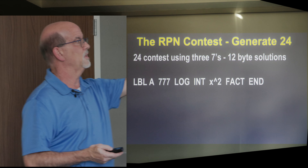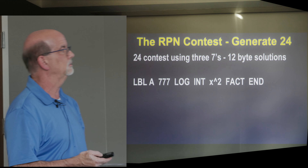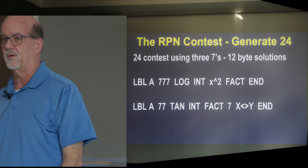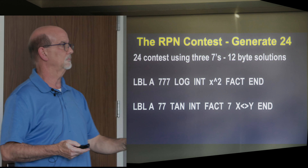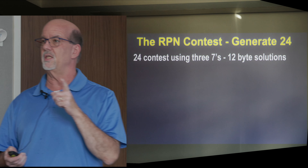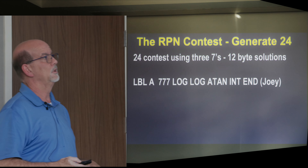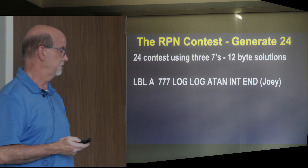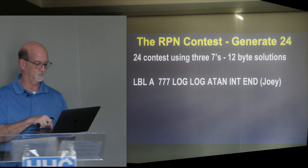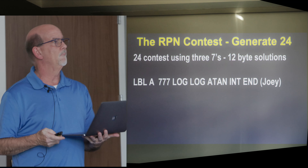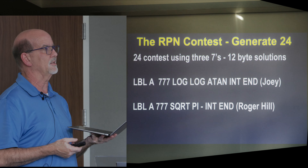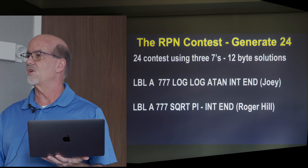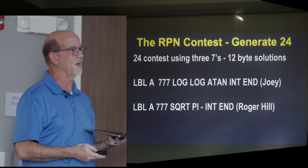12-byte solutions: 7 7 7, log, integer, squared, factorial. 77, tangent, integer, factorial. 7 — just to use it — x and y, you already had the 24 showing, you had to use it somewhere. Joey did this one: 7 7 7, log, log, arctangent, integer, end — that generated 24, good job Joey. And Roger Hill: 7 7 7, square root, pi minus, integer, end — that's 12, but it turns out Roger does not win this one. That does give 24 as well.